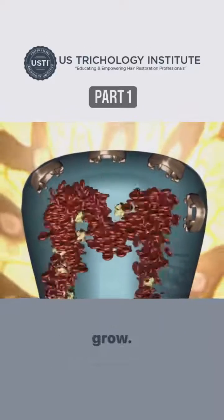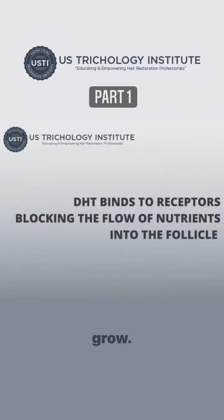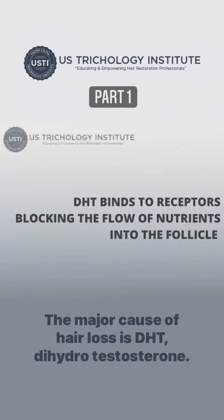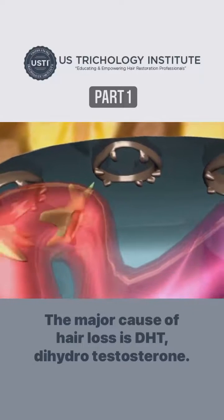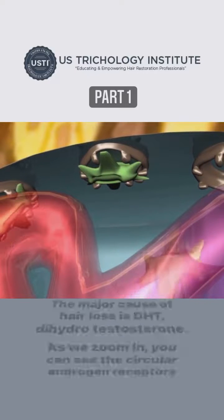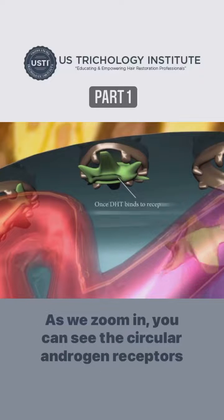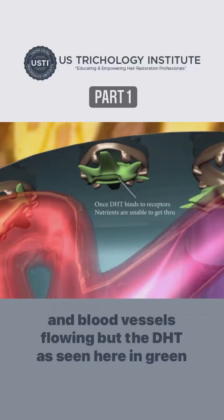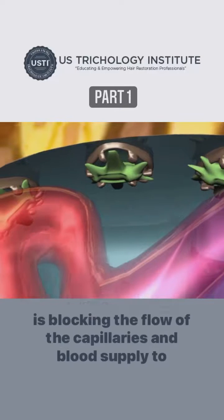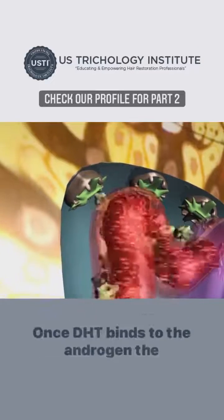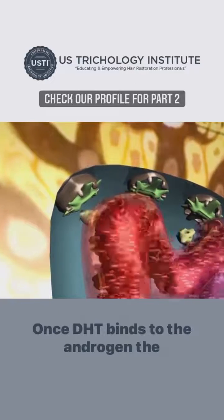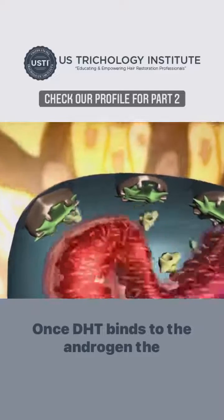The major cause of hair loss is DHT, dihydrotestosterone. As we zoom in, you can see the circular androgen receptors and blood vessels flowing, but the DHT — seen here in green — is blocking the flow of the capillaries and blood supply to the androgen receptors. Once DHT binds to the androgen receptors,